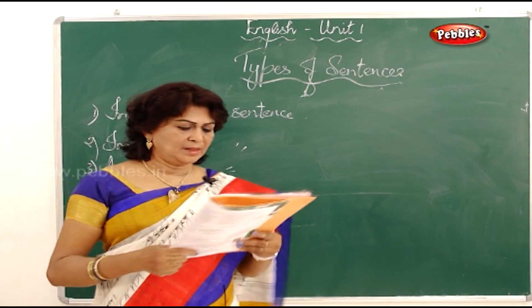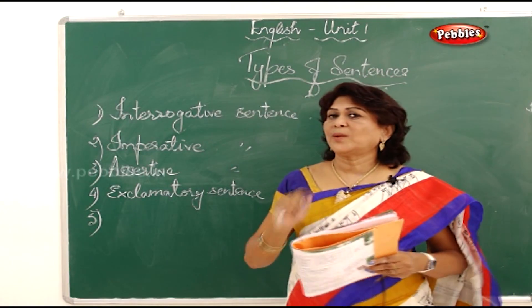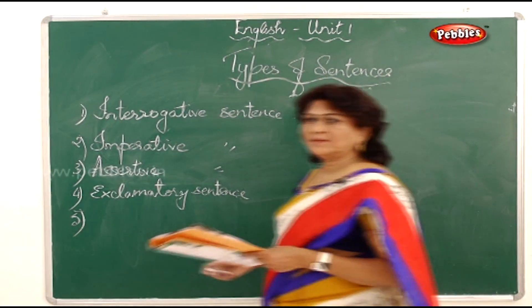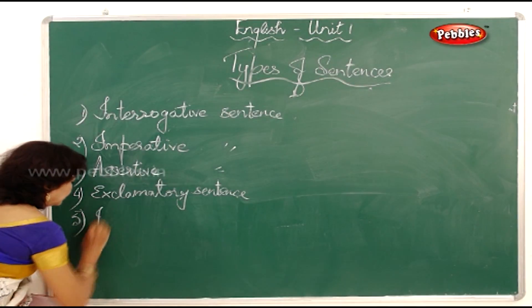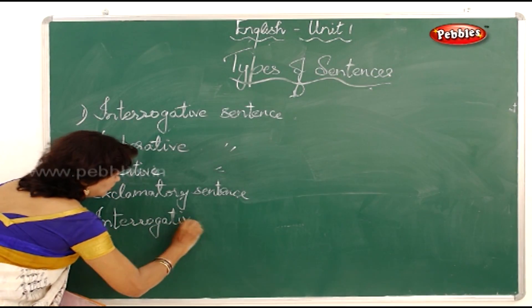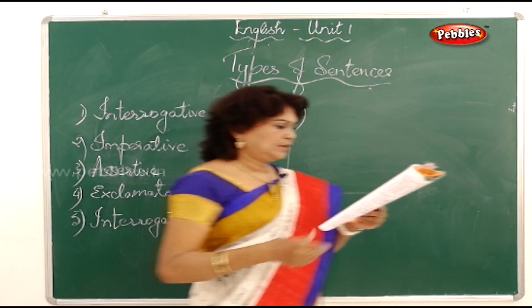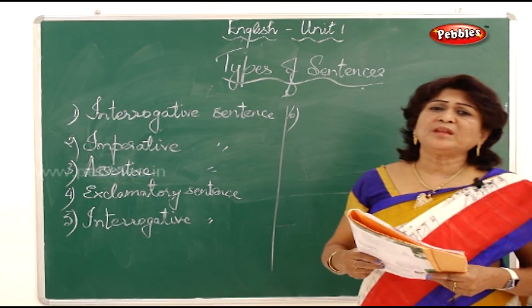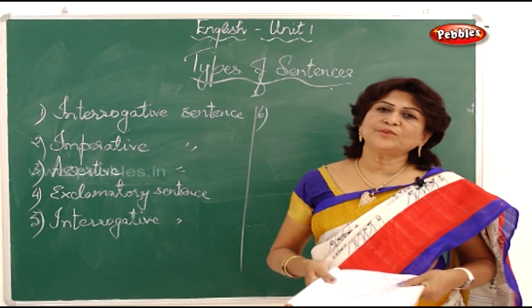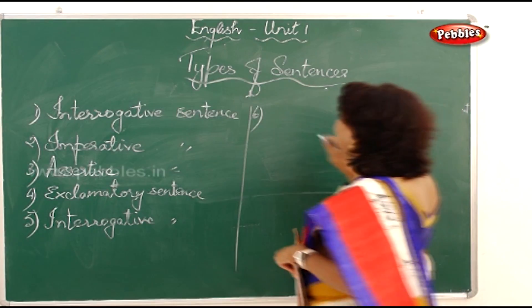Fifth: 'who is your favourite cartoon character' — it ends with a question mark, so it is an interrogative sentence. Sixth: 'please forgive me' — one is requesting the other to forgive, so it is a request and therefore an imperative sentence.